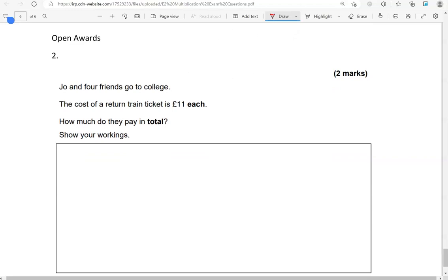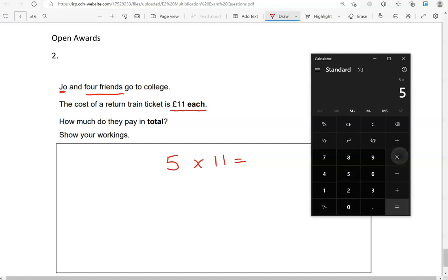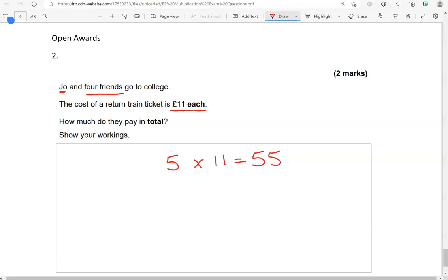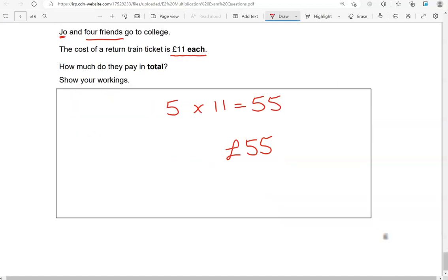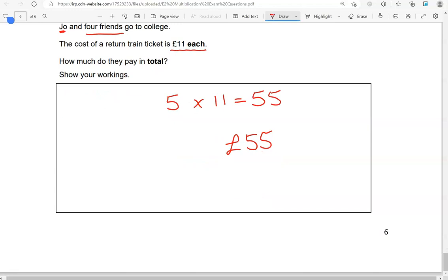Joe and 4 friends go to college. The cost of a return train ticket is £11 each. How much do they pay in total? Show your workings. So it's Joe and 4 friends. So that is 5 of them. Times 11 gives us 55. And that is 55 pounds. We need to make sure we include that because it could be that you're saying 55 pence.